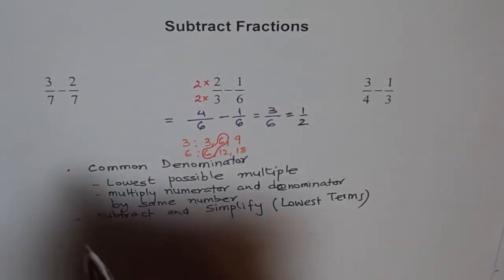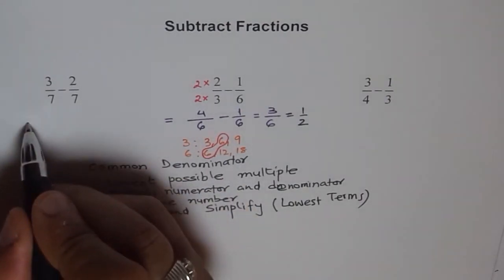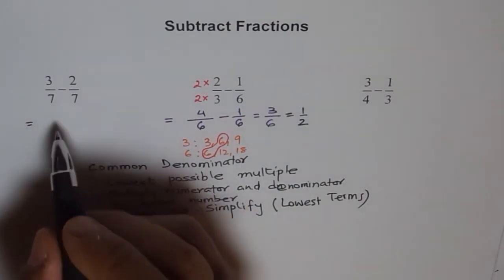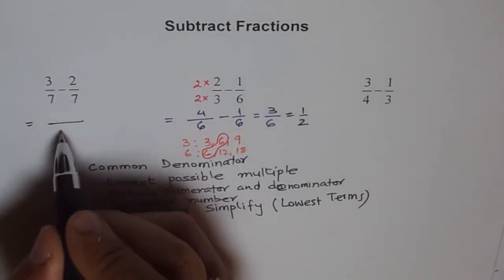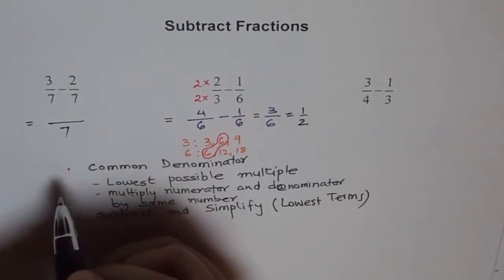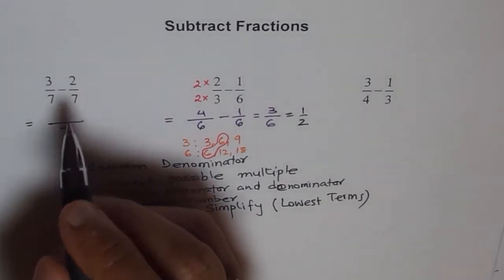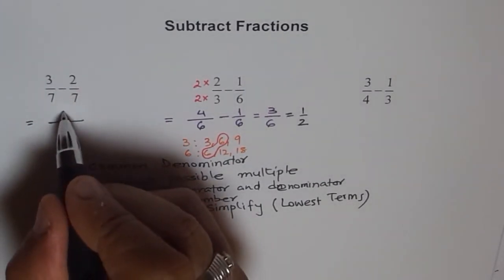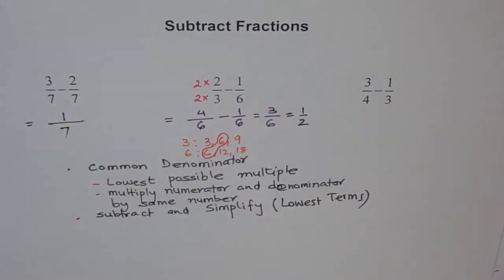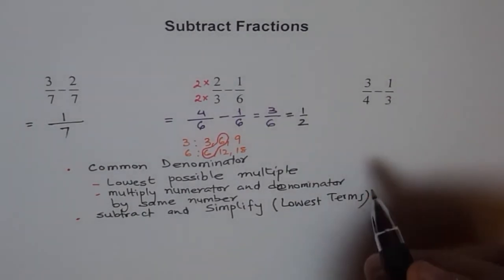Once we have a common denominator we can subtract. For the example with 7s, we already have a common denominator of 7, so we go straight to 3 minus 2 equals 1, giving us 1 over 7.